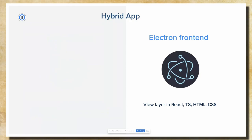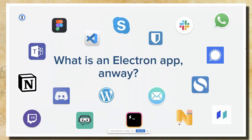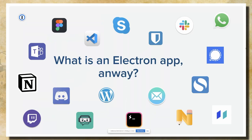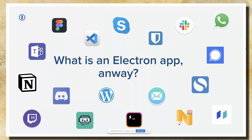Before we can do that, we have to actually explain what an Electron app even is. They're pretty popular, for better or worse — they're all over our computers. I guarantee everyone watching this has one open right now, probably more than one in their dock. But what exactly are they and why aren't they secure? Or at least, why do we think they're not secure?